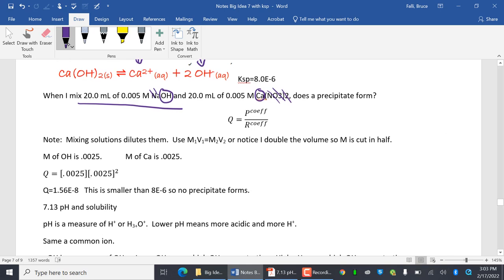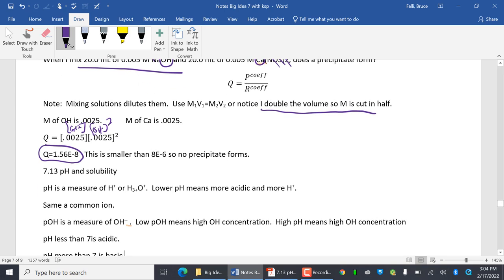Note, when you mix solutions, you dilute them. So you either use M1, V1, or because my volumes are the same, I'm doubling the volume, so it's cut in half. Q is products over reactants. So calcium plus 2 and hydroxide ions squared. And then I do the math. This is my Q. This is smaller than 8E negative 6, so no precipitate forms.